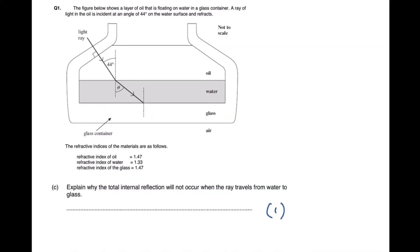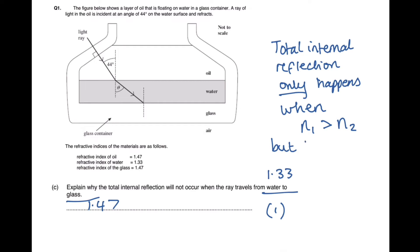The next part of this question is explaining why total internal reflection is not going to occur when the ray travels from water to glass. Water has a refractive index of 1.33, glass 1.47. Now for total internal reflection to actually occur you need the refractive index of material 1 to be greater than the refractive index of material 2. In this case we are not meeting this condition because n1 is actually less than n2 here so total internal reflection will not happen.